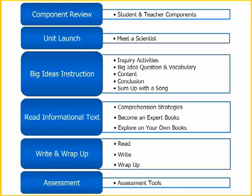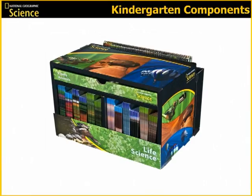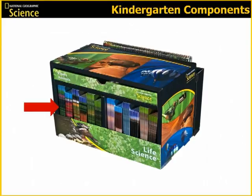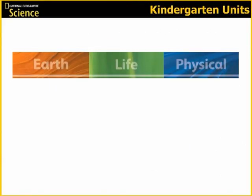Let's begin with a review of the components you will receive for each unit. As a reminder, in kindergarten, all print components for each unit will be housed in a kit like you see here. All of your big books and big idea cards will be found in the back of the kit. This drawer contains all of your teaching materials, and all of the student books are here. There are three units available for kindergarten: earth, life, and physical.